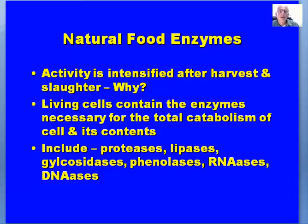Natural food enzymes are enzymes found in the food product itself — their activity is intensified after harvest and slaughter. Living cells contain the enzymes necessary for total catabolism of the cell's contents, including proteases, lipases, glycosidases, phenolases, ironases, and DNases. The cell itself contains enzymes that allow it to be broken down into individual components.